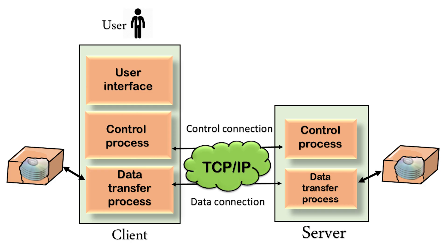FTP sends control information out-of-band, as it uses a separate control connection. Some protocols send their request and response header lines and the data in the same TCP connection; for this reason, they are said to send their control information in-band. HTTP and SMTP are such examples.